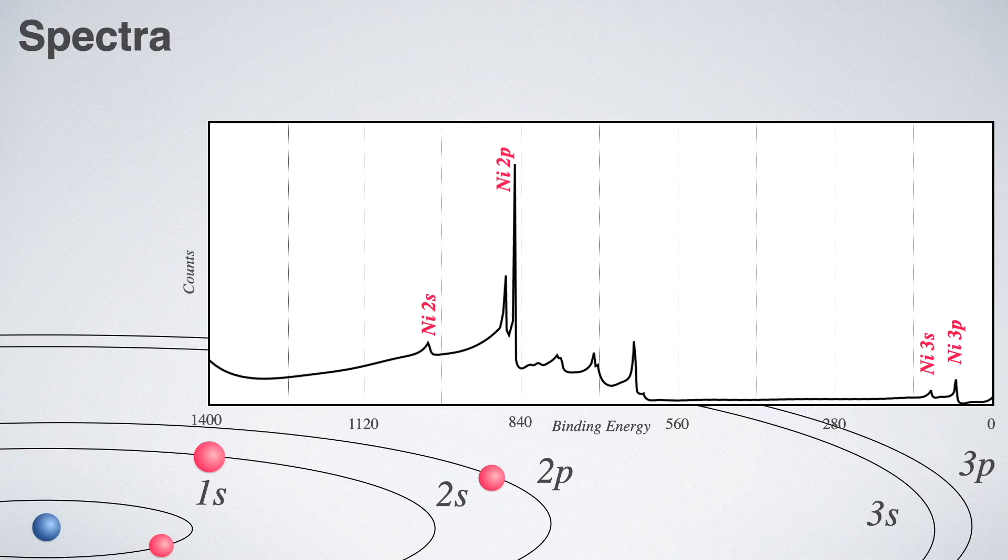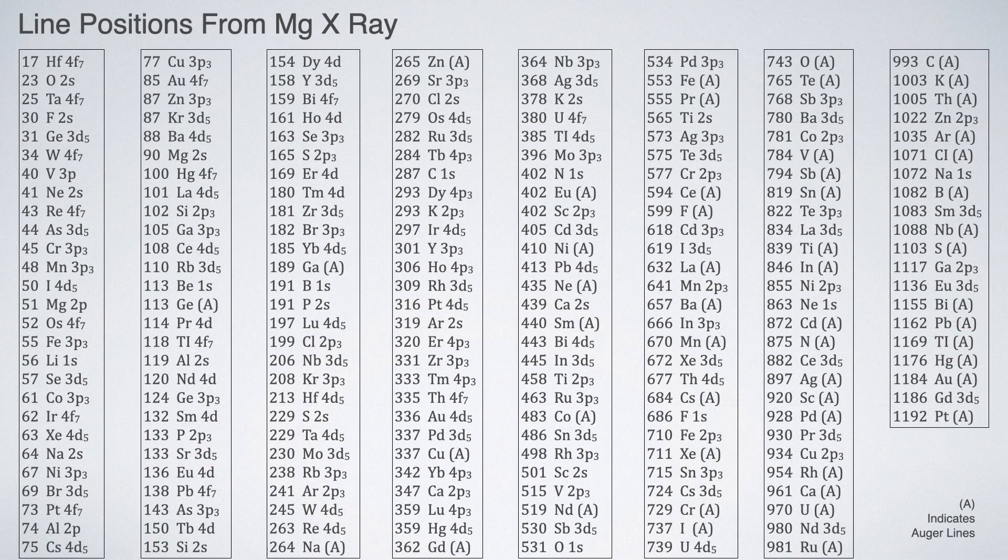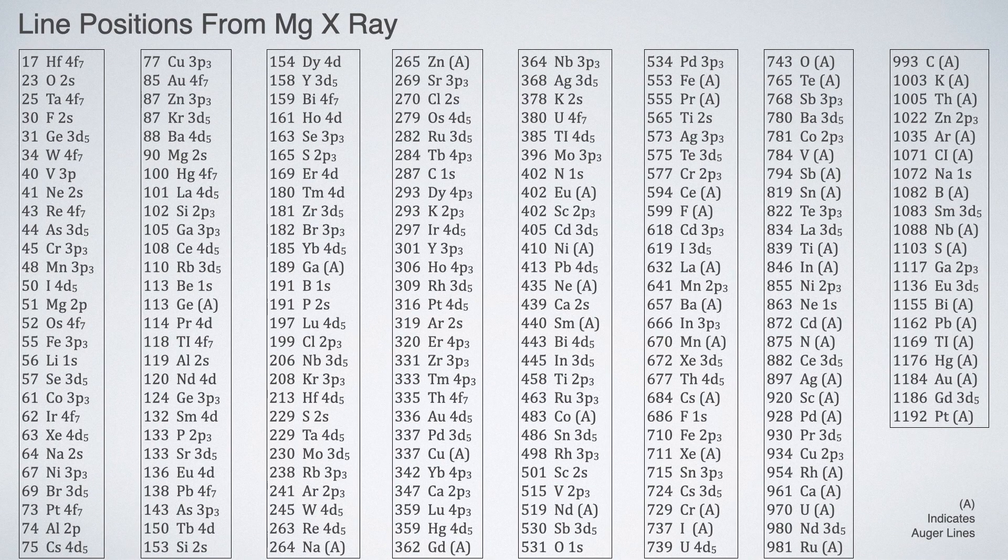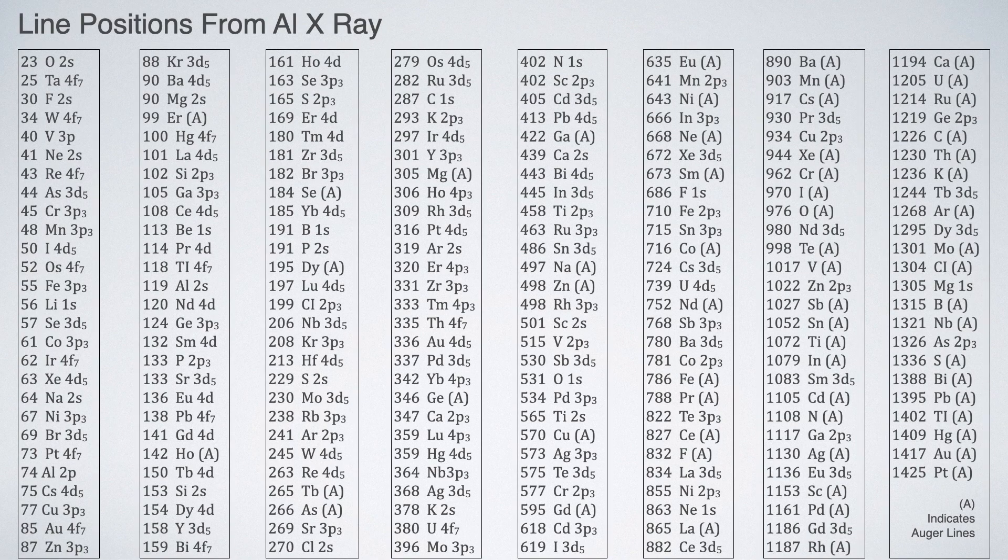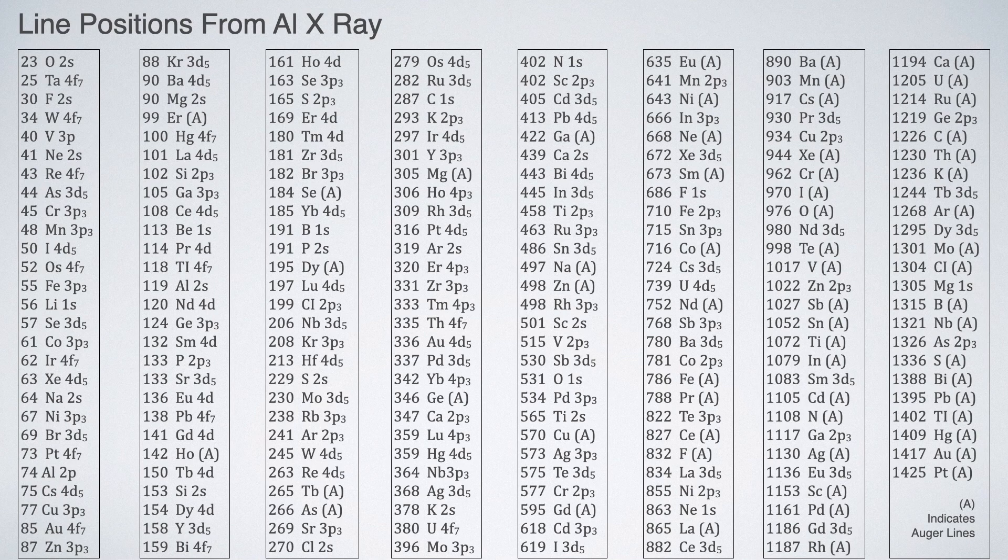In some cases, when we have to identify unknown peak, we generally use NIST XPS database of the standard values of the binding energy of pure elements. Here, we have a list of binding energy line position when magnesium X-ray is used and when aluminum X-ray is used. You can easily find the peak position from the graph and from this chart, you can identify the elements present in your sample. I will give you the link in description for these charts which you can download for your reference.